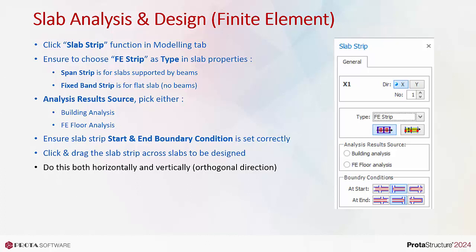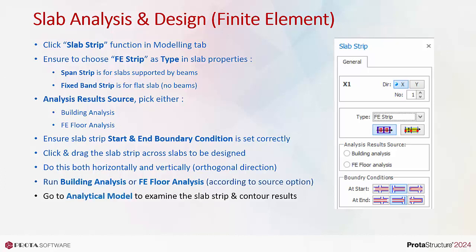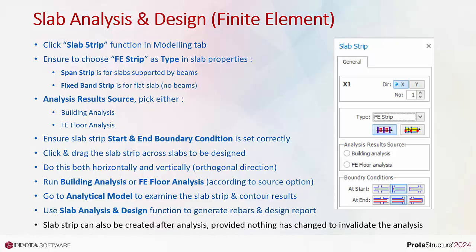Click and drag the slab strip across the slabs to be designed — do this both horizontally and vertically, that is in orthogonal directions. Run building analysis or FE floor analysis according to the chosen source option. Go to the analytical model to examine the slab strip and contour results, such as the moment contour. Use the slab analysis and design function to generate rebars and a design report.